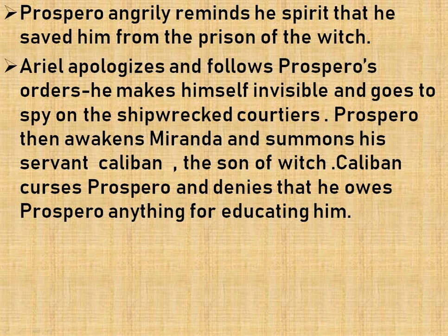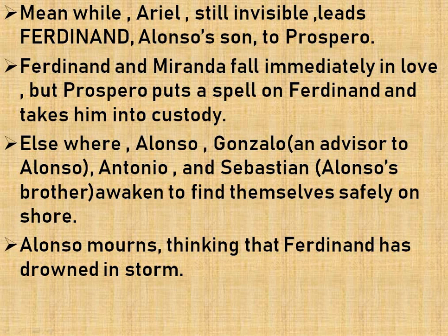Ariel made himself invisible and goes to spy on the shipwrecked courtiers. Prospero then awakens Miranda and summoned his servant Caliban, the son of a witch. Caliban cursed Prospero and denies that he owes Prospero anything for educating him. Meanwhile, Ariel, still invisible, led Ferdinand, Alonso's son, to Prospero. Ferdinand and Miranda fall immediately in love, but Prospero put a spell on Ferdinand and takes him into custody.